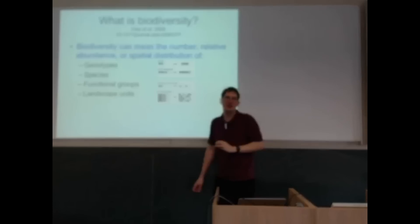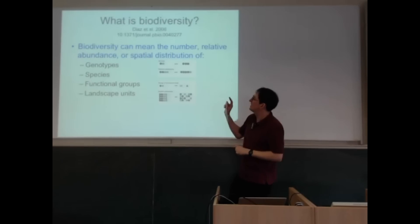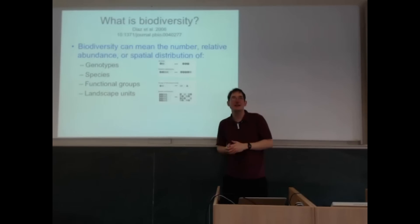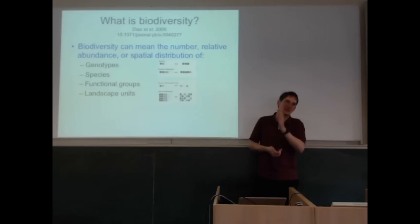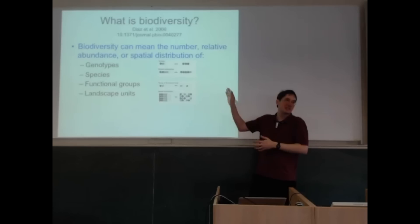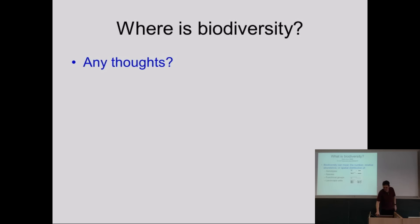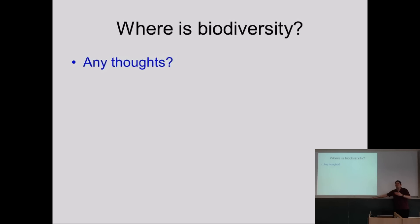Most people, most of the time, when they talk about biodiversity, they talk about the number of species, partly because that's quite easy to measure. For the rest of this lecture, I'll mostly be talking about the number of species, but really most of this can apply to these different definitions. So another question: where is biodiversity, broadly speaking, in the world? Where do we have most species?